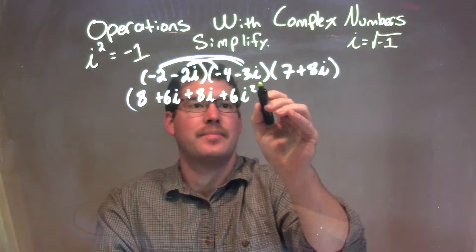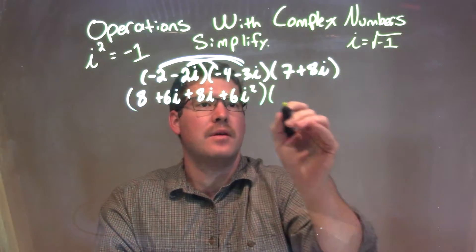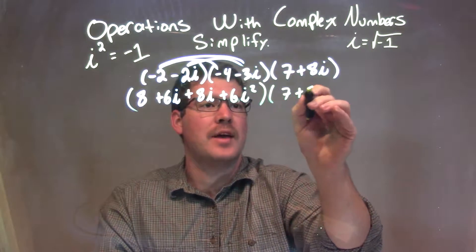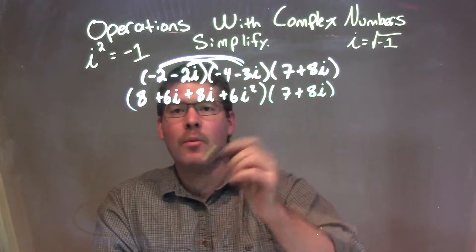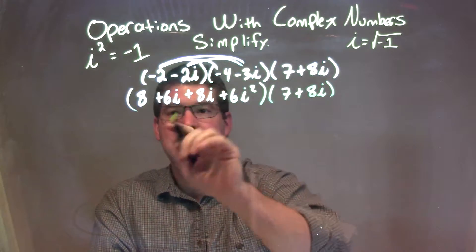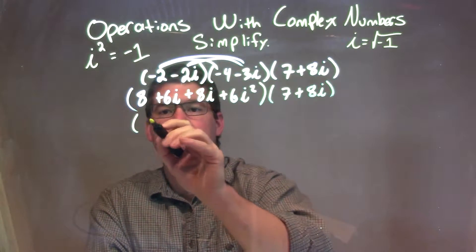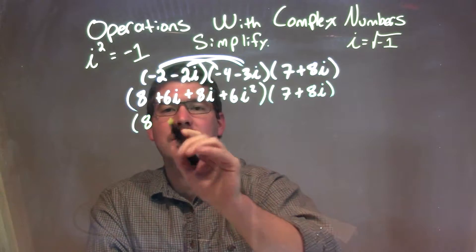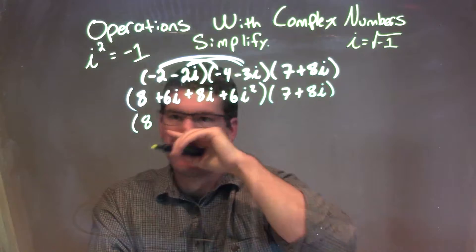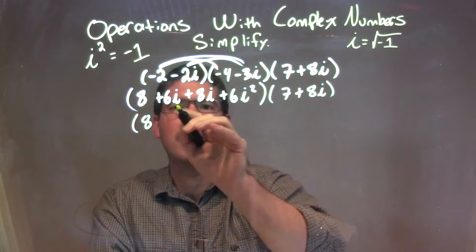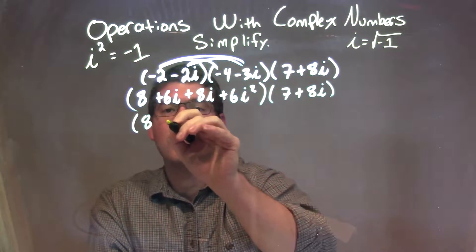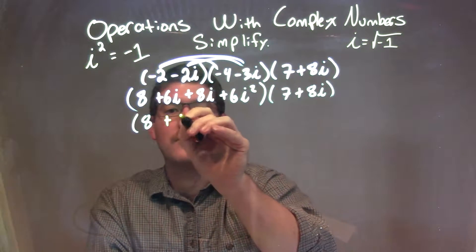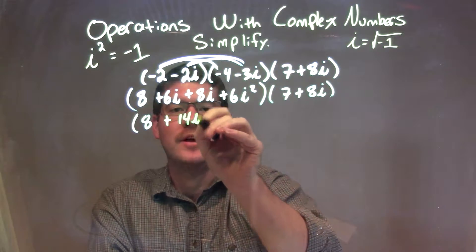Bring down the 7 plus 8i. And if you've been watching my videos, I can simplify this. I can have 8 right there — it just comes down. But then 6i and 8i is 14i, so we have plus 14i right here.